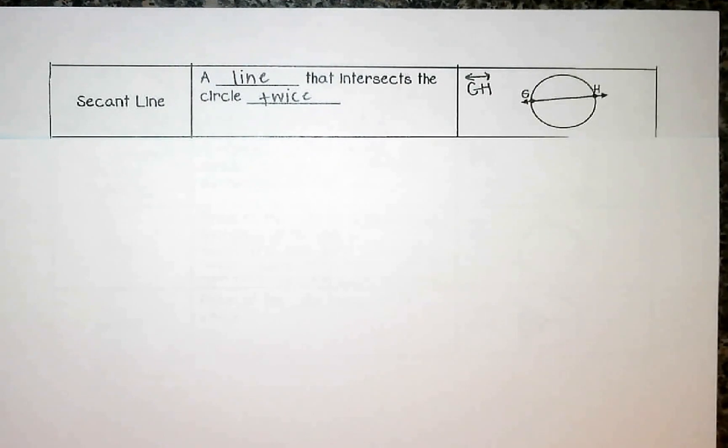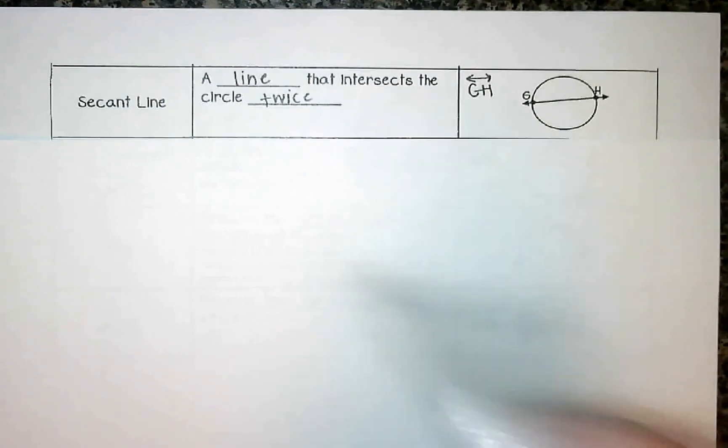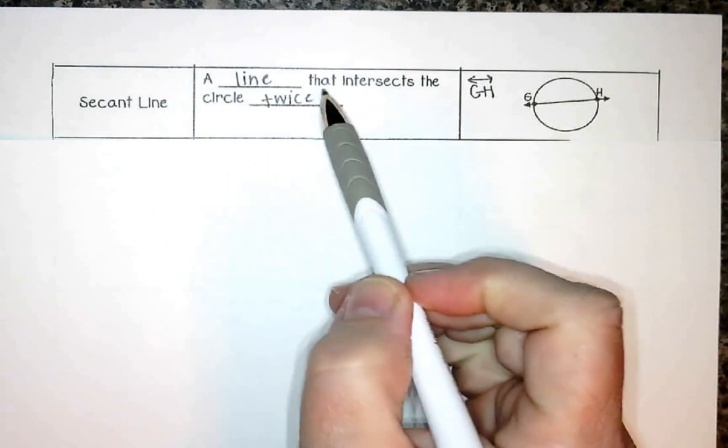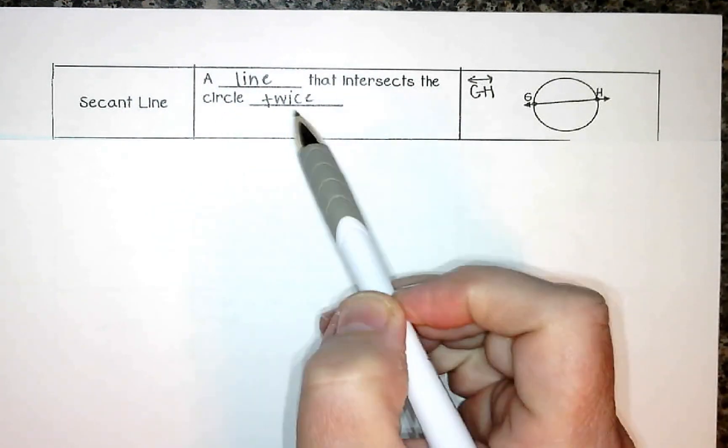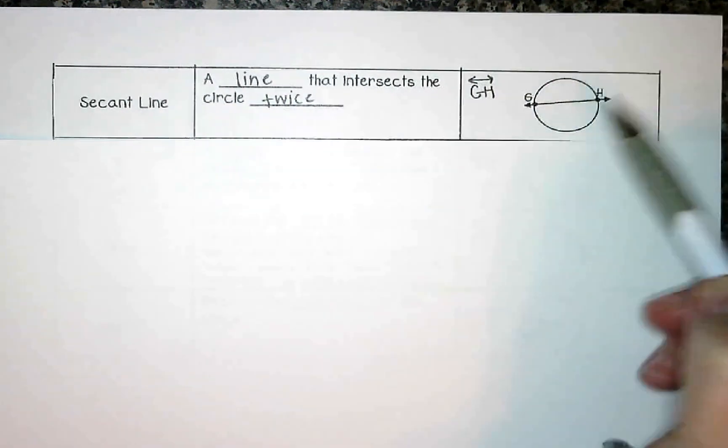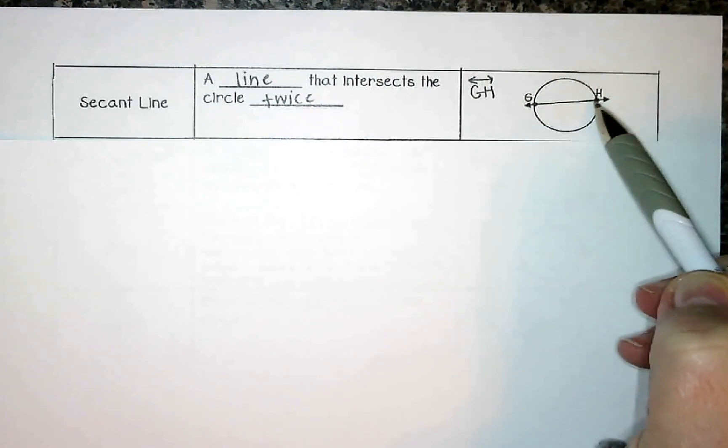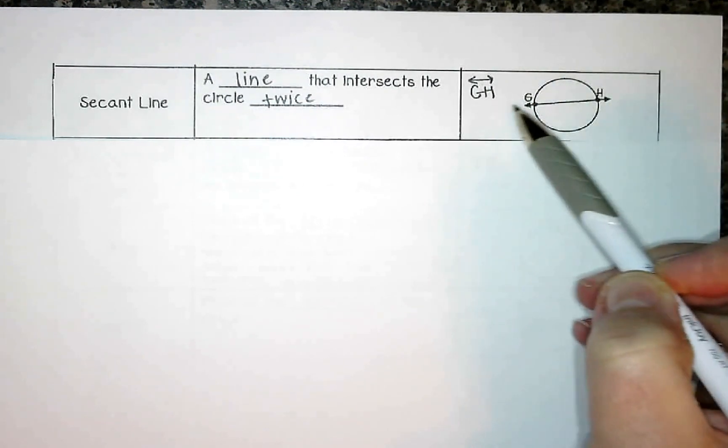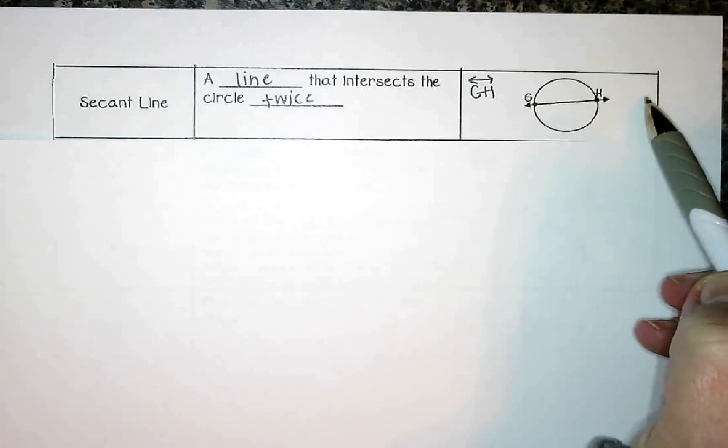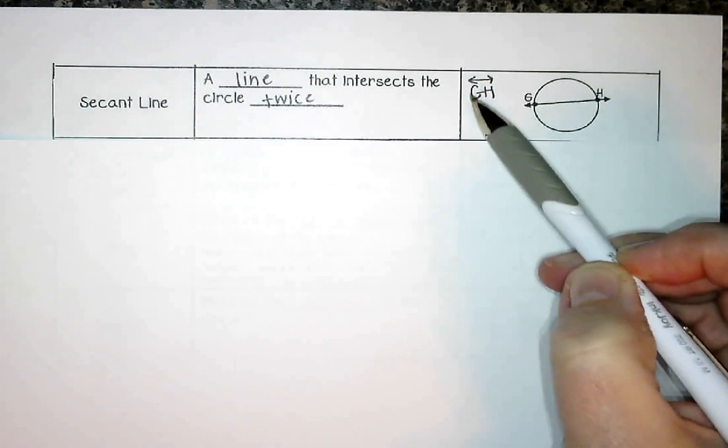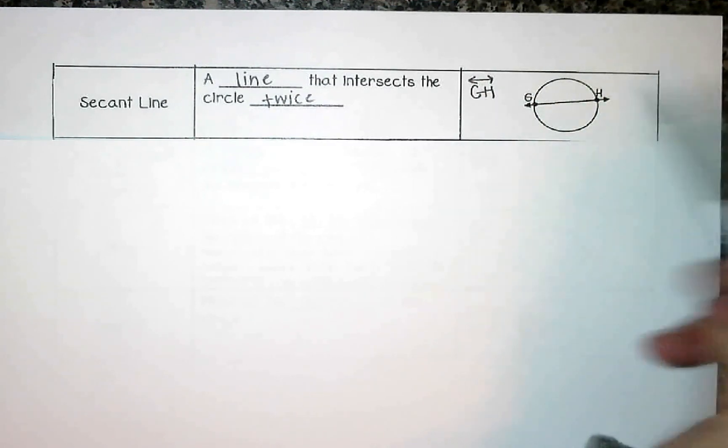Secant. A secant is a line. The other ones that we've talked about are actually segments. So a secant is a line that intersects the circle twice. So if I look over in my picture, this is what it looks like. I have point G and point H, and I have a line that intersects both of those. Hence the label here, line GH. That's called a secant.